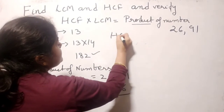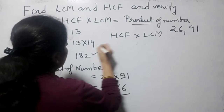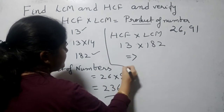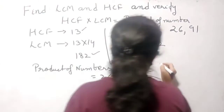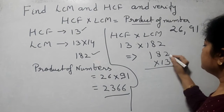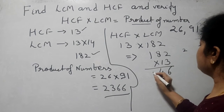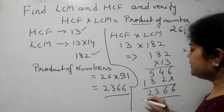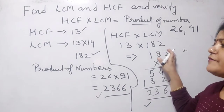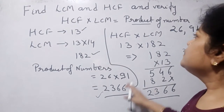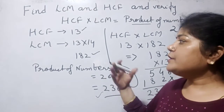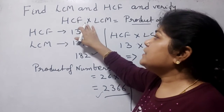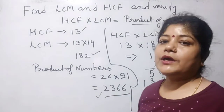We multiply both of them and find whether it is correct or not. 182 into 13: we get the same answer, 2366. So the product of HCF and LCM equals the product of the numbers — this relationship is verified. This relationship is very important: if any of the values — HCF, LCM, or the numbers — is not given, then we can easily find it using the formula HCF × LCM = product of numbers.